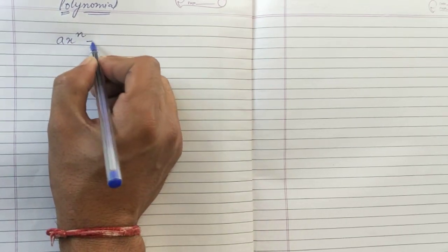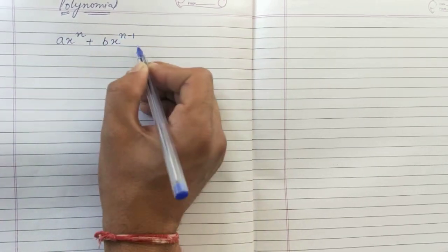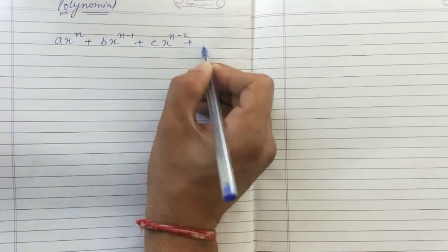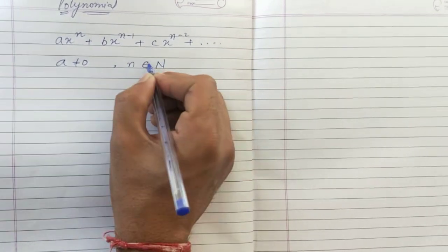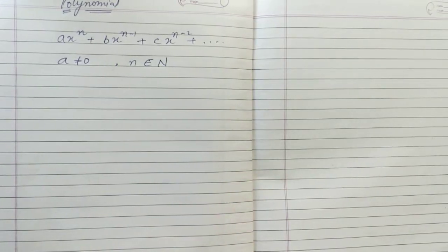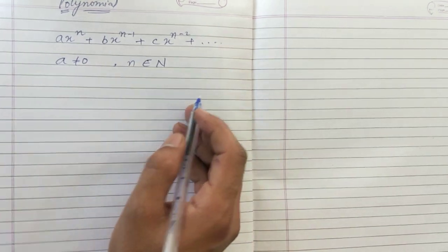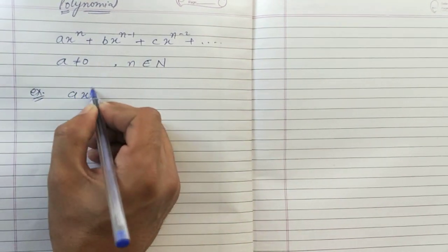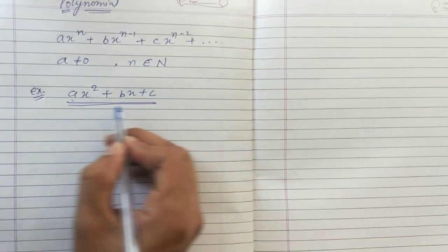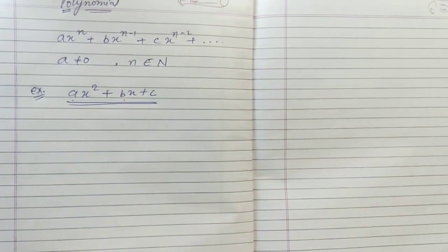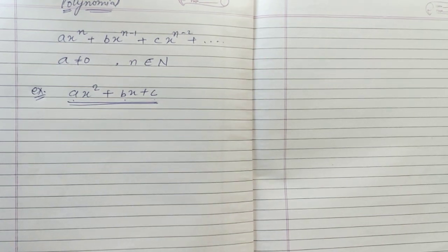two terms is called a polynomial. Its general form can be written as: ax^n + bx^(n-1) + cx^(n-2) and so on. Here the first condition is a should not equal zero, and n belongs to natural numbers. For example: ax² + bx + c is a polynomial.